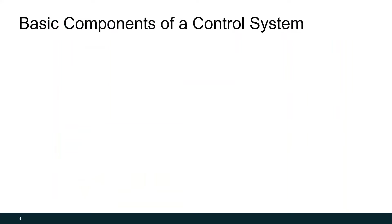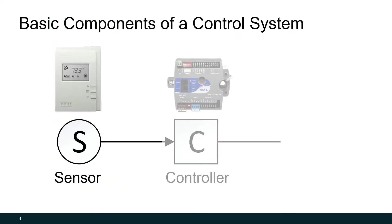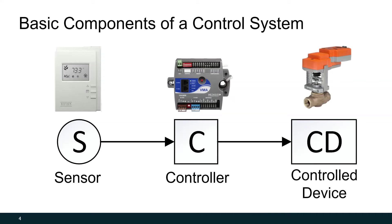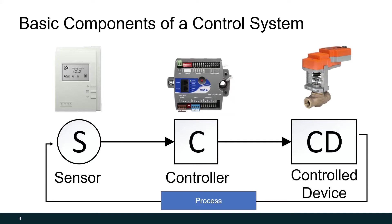In the previous webinar, we learned about the basic components of a control system: the sensor, the controller, and the control device. These three components form a control loop, which works to affect the process to help us get to the conditions that we want for the building, or whatever process we're trying to affect. That loop will repeat over time, and ideally we'll get to the values that we want it to be at.